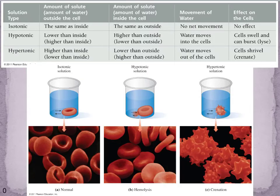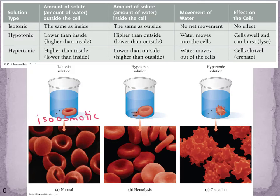Where this becomes an issue is when we start looking at blood. If you're in the hospital and they're giving you a saline solution, you want something that's known as isotonic — you might also see this called isoosmotic, both terms are used. What that means is that it has the same osmotic pressure, the same concentration of particles in that solution. The concentration of particles outside the cell and inside the cell are the same, so as fast as water molecules are going into the cell, water molecules are coming out of the cell. This is what we want — water flowing evenly in and out of the cell.